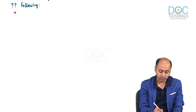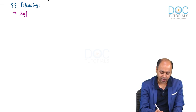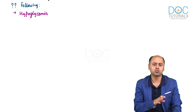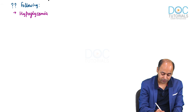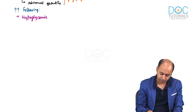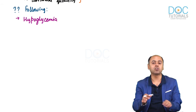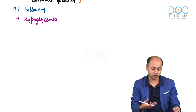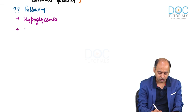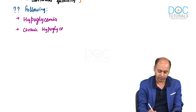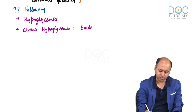First in this list will be the finding of hypoglycemia. The hypoglycemia may be profound — very severe — or it may be moderate or mild, but hypoglycemia will be one feature. Second feature is the evidence of chronic hypoglycemia. We will have biochemical findings which tell us that this hypoglycemia has been there for quite some time.